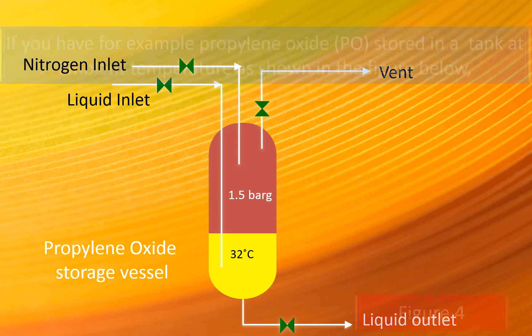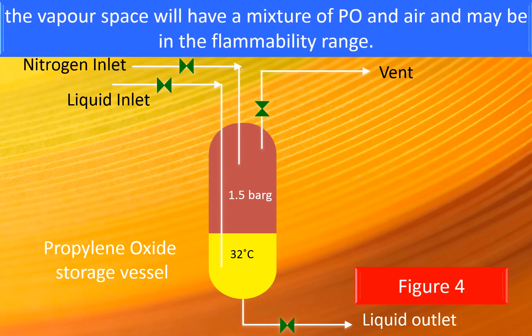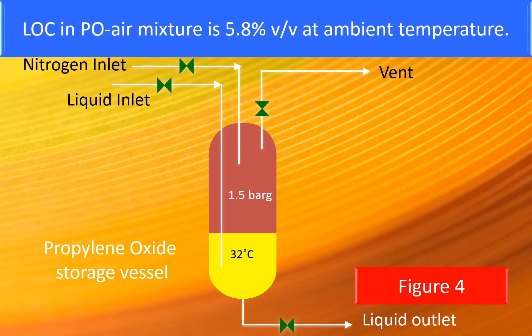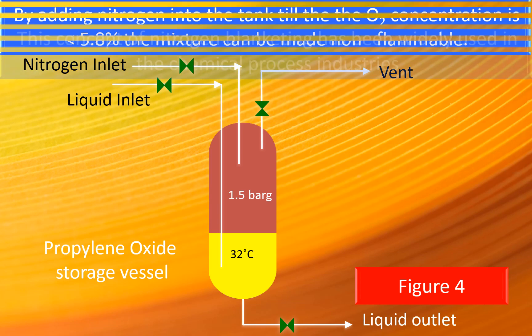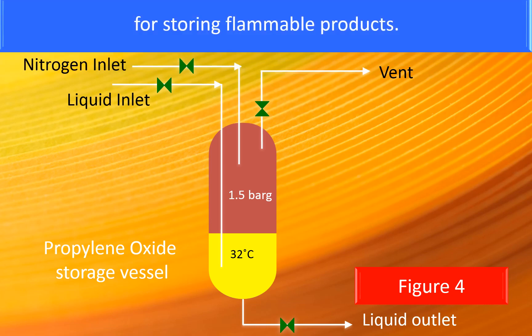For example, if propylene oxide is stored in a tank at ambient temperature, the vapour space will have a mixture of propylene oxide and air which may be in the flammable range. The LOC for a propylene oxide-nitrogen mixture is 5.8% volume by volume at ambient temperature. By adding nitrogen into the tank until the oxygen concentration is less than 5.8%, the mixture can be made non-flammable. This concept of nitrogen blanketing has been widely used in chemical process industries for storing flammable products.